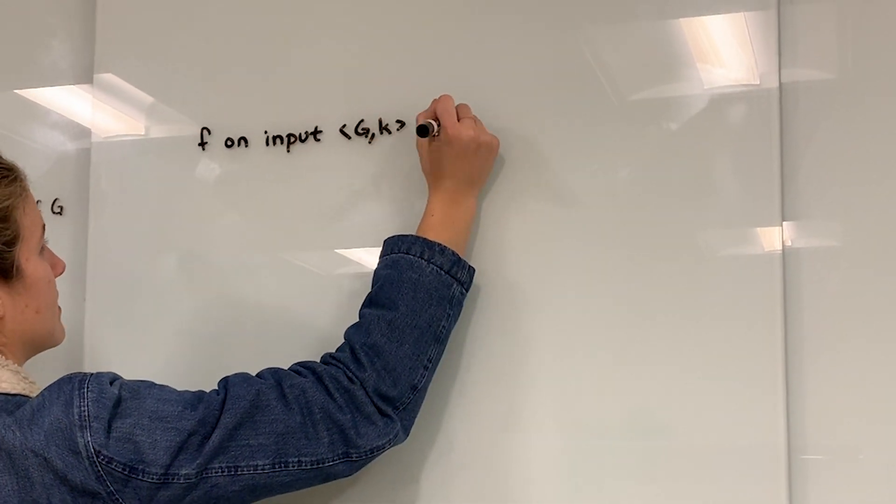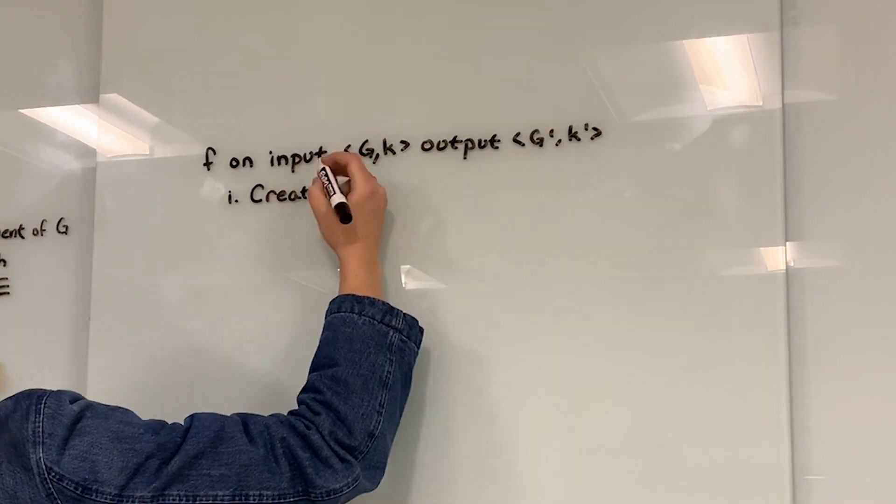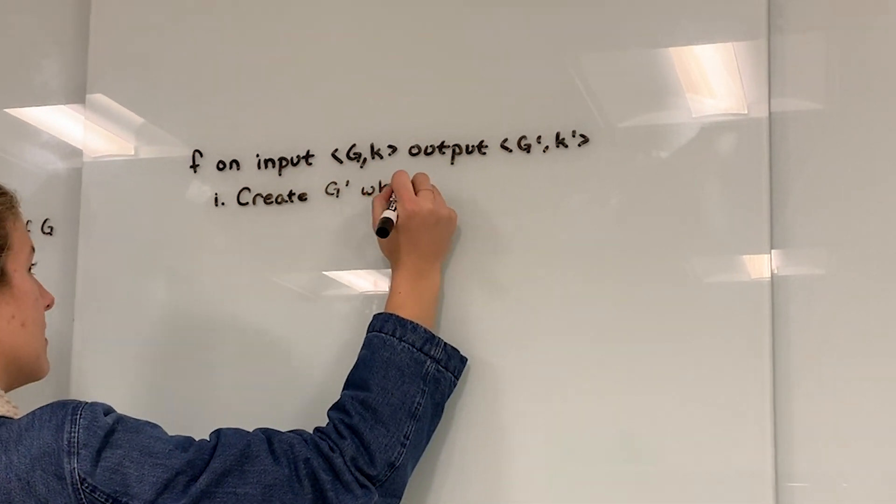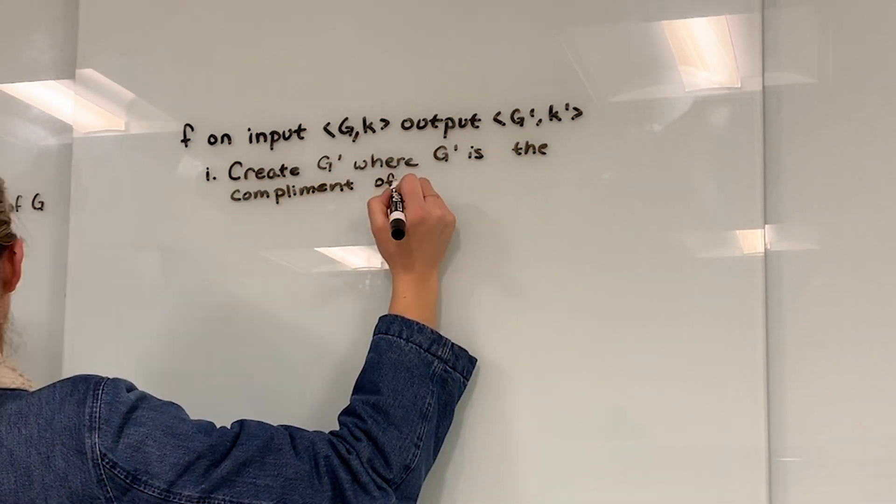To prove that vertex cover is NP-hard, we will prove that clique-many-1 reduces to vertex cover. So consider the following definition of a function f on input G, K, output G', K', as follows.